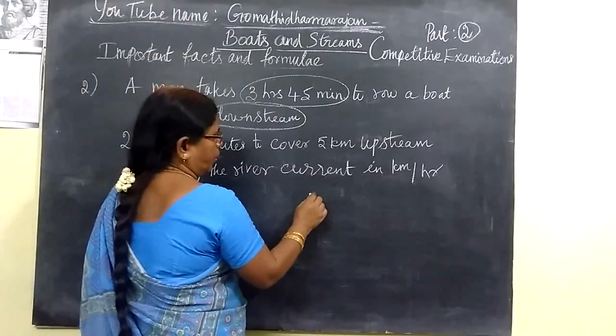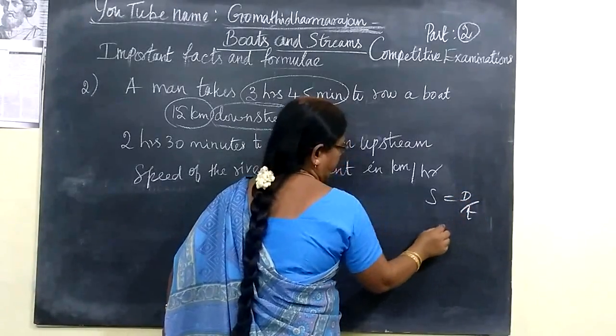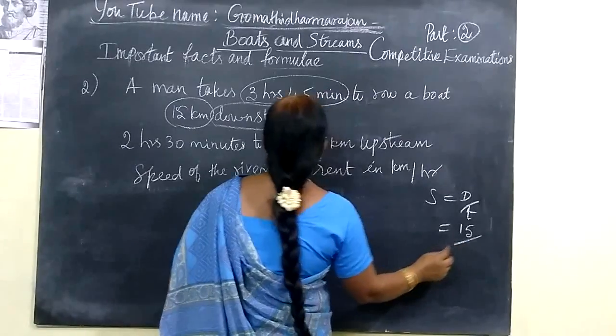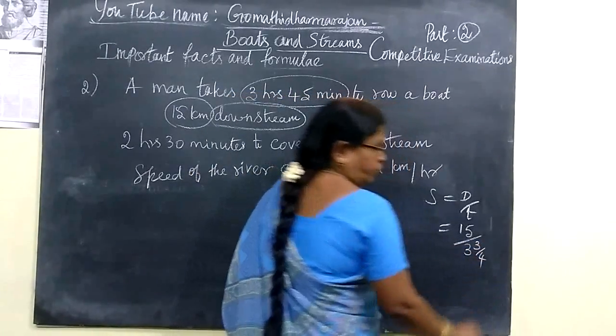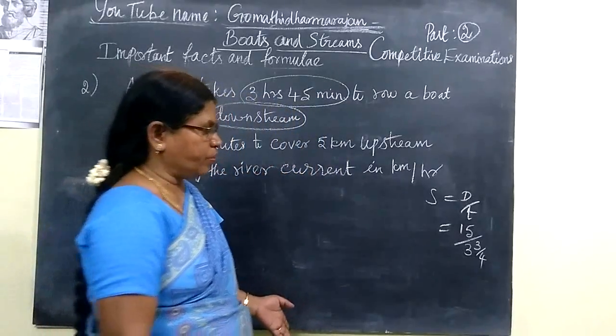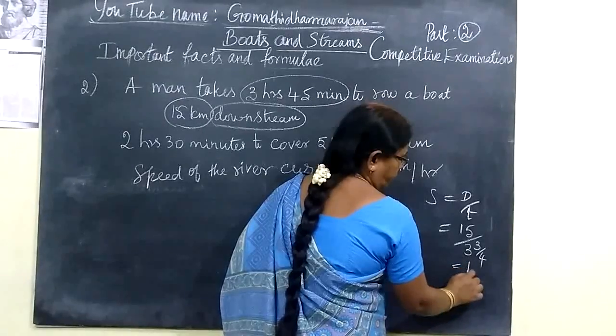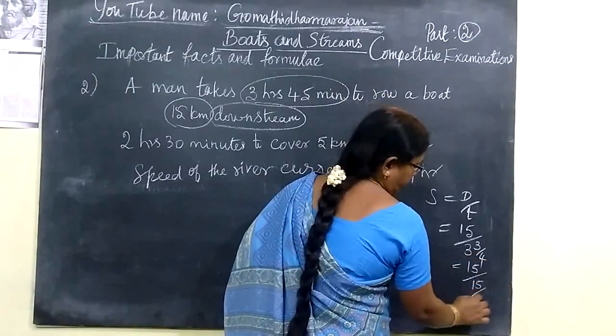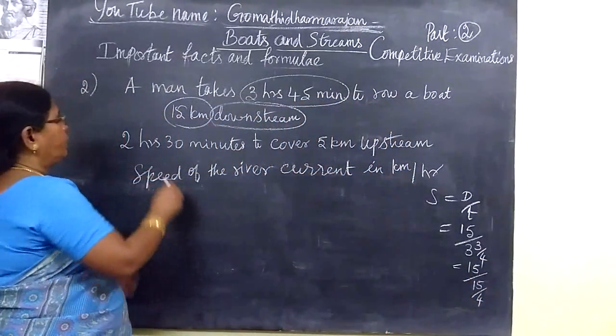So we know the formula, speed equal to distance by time. Distance 15 km, time we have 45 minutes, that is 3 by 4. So if you change into improper, 15 by 4. So if I write in the reciprocal of time, so the next one.